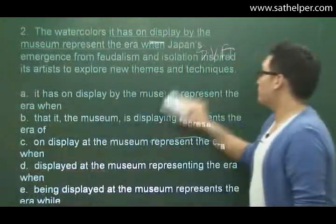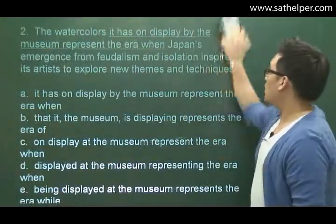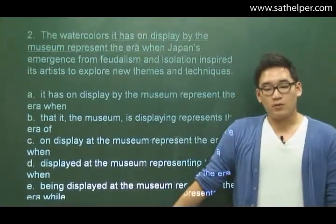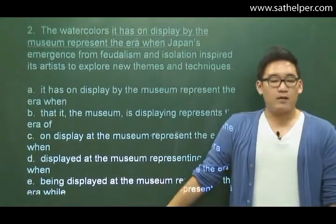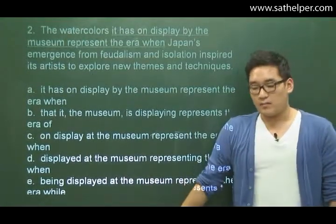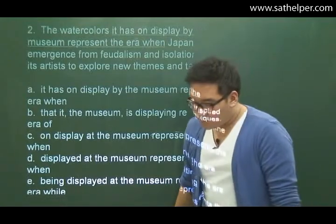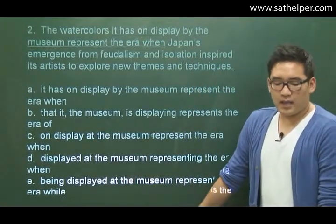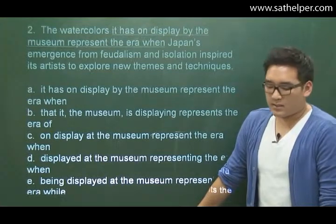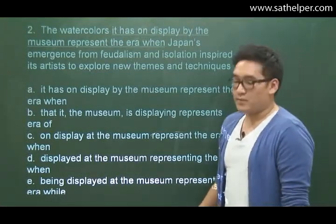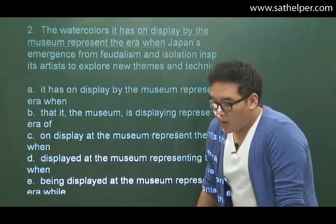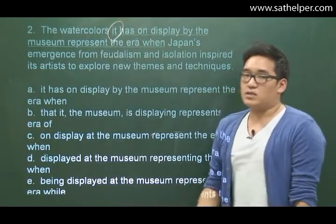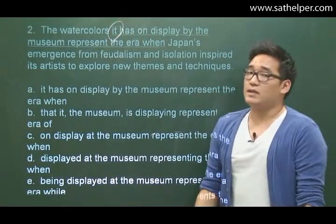Question two reads: 'The watercolors it has on display by the museum represent the era when Japan's emergence from feudalism and isolation inspired its artists to explore new themes and techniques.' There are too many prepositions in this sentence — 'on display,' 'by the museum,' 'when Japan's emergence' — simply too many. Also, the 'it' here is ambiguous. We don't know what 'it' is doing, so we want to get rid of it as well.